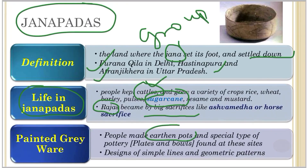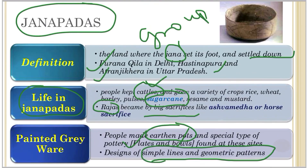People also made earthen pots, and a special type of pottery has been found at these sites - plates and bowls with designs of simple lines and geometric patterns. These have been grouped under the name 'Painted Greyware.' You can see a sample of painted greyware in the picture here.